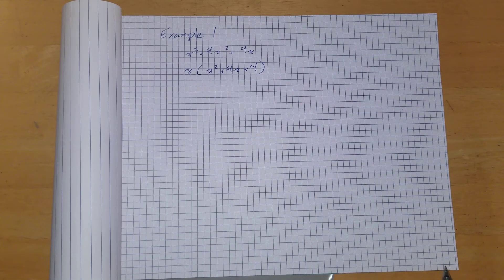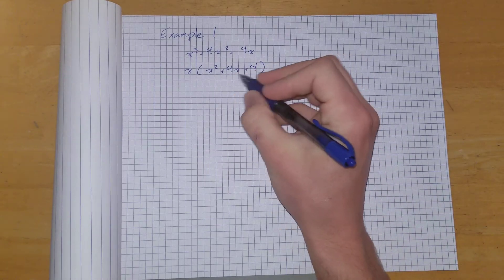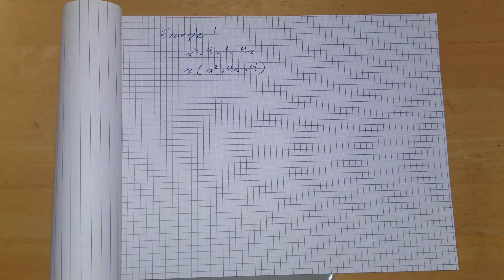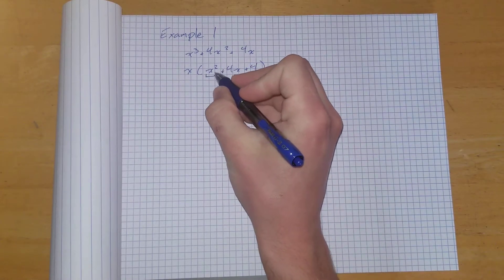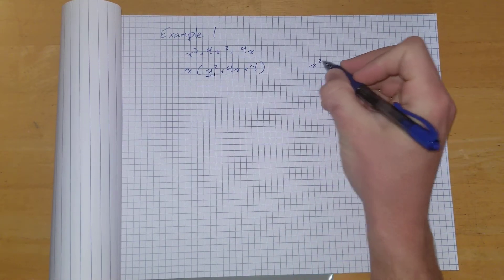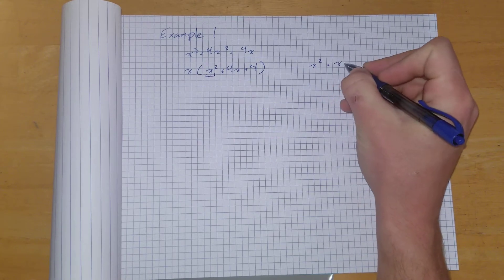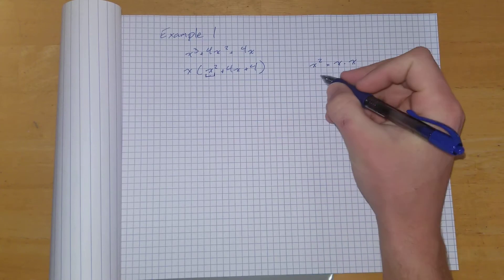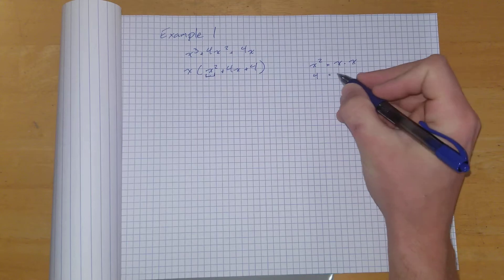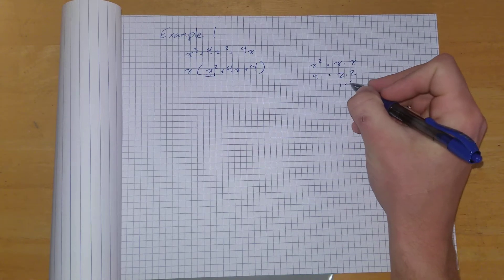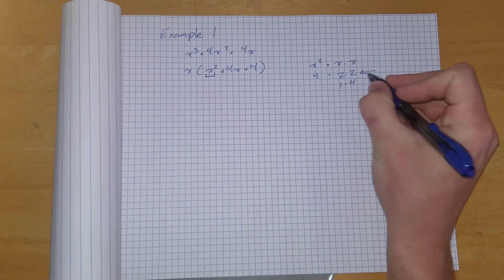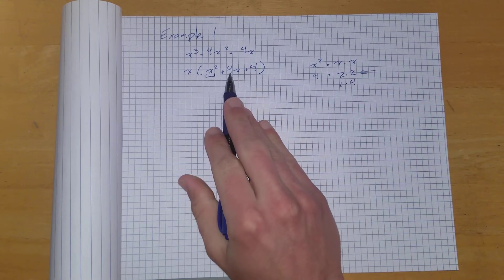And then from here, we've seen this before. This is just looking at this. What is the product of x squared? It's just going to be x times x. What is the product of 4? It's going to be 2 times 2 or 1 times 4. In this case, it's 2 times 2 because 2 plus 2 will equal 4.